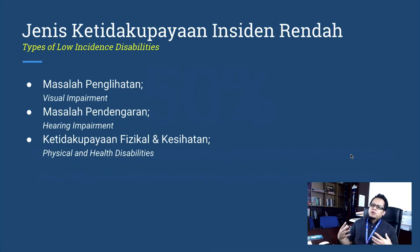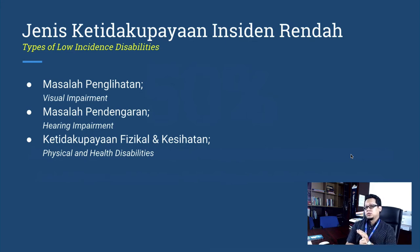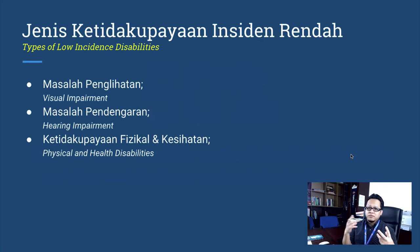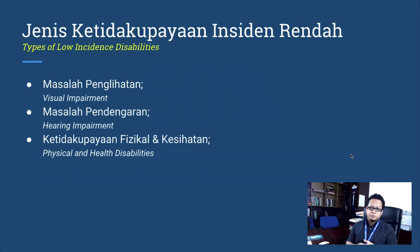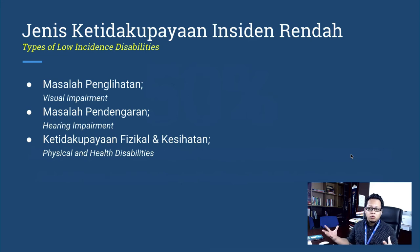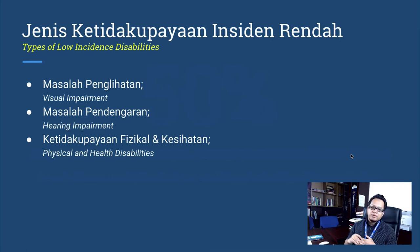There are a few types of low incidence disability. First, we have visual impairment — there is something not right with the eyes, so it affects vision. Second, hearing impairment — probably from birth or after an accident, they have lost their hearing ability. And third, physical and health disability. So those are the three types of low incidence disability.